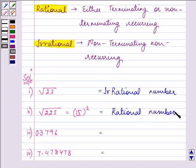Proceeding on to the next part, 0.3796 is a terminating decimal, so that means terminating decimals are classified as rational numbers.